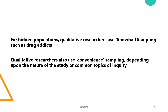Sometimes qualitative researchers need to select key respondents from a hidden population, or the purpose of their study is to investigate sensitive topics. Then researchers use snowball sampling, a technique which helps the researcher to get respondents through a chain. For example, after interviewing one drug addict, he or she may refer to another drug addict during the interview.